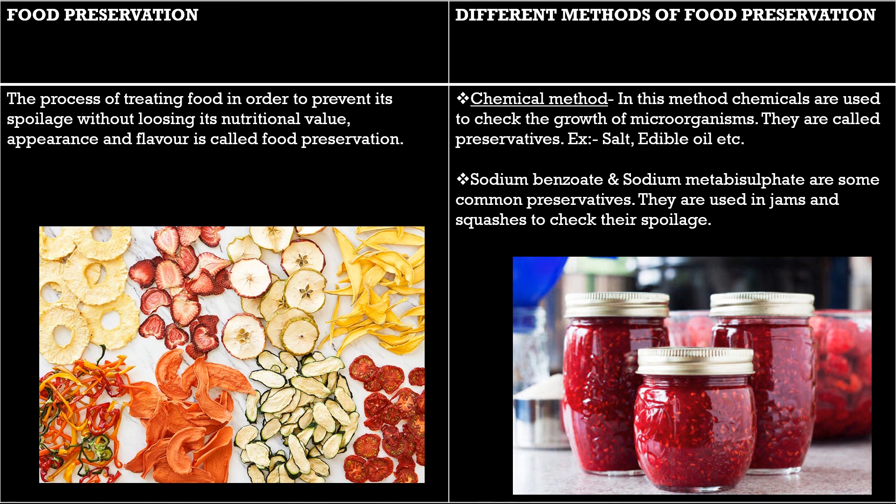In this video, we will discuss about the preservation of food. Food materials like milk, fruits, vegetables, meat, fish and cooked food get spoiled easily because they contain a lot of water, which allows food-spoiling microorganisms to grow. We can prevent the spoilage and contamination of food materials by proper methods of food preservation. The process of treating food in order to prevent its spoilage without losing its nutritional value, appearance and flavor is called food preservation.